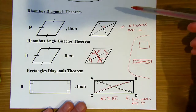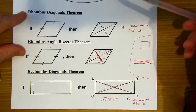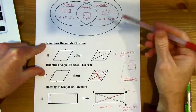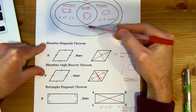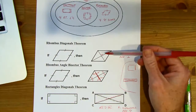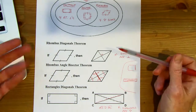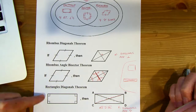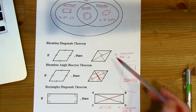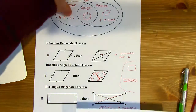We don't have separate theorems for a square, but remember a square is a rhombus and also a rectangle. So a square is going to have all of these properties. We don't need additional theorems because squares are already covered under both the rhombus theorems and the rectangle theorems. That's why a square is the most special — it has all the properties of rhombi and rectangles.